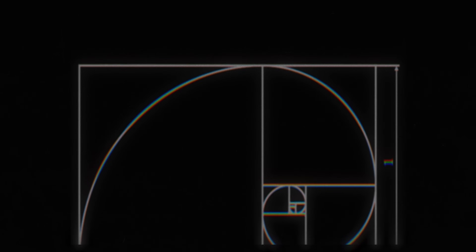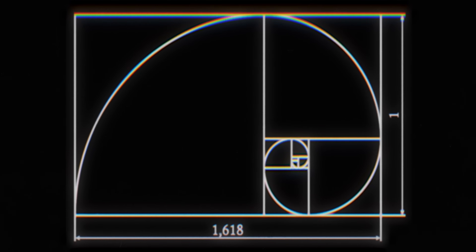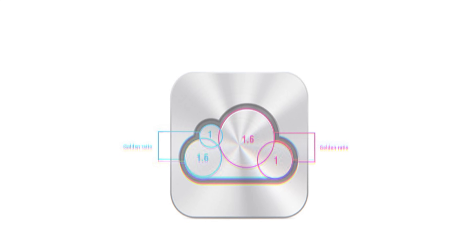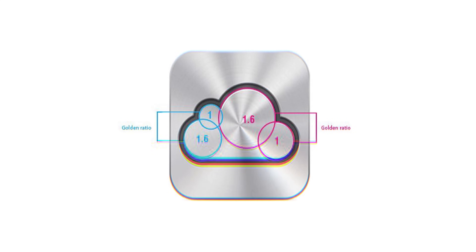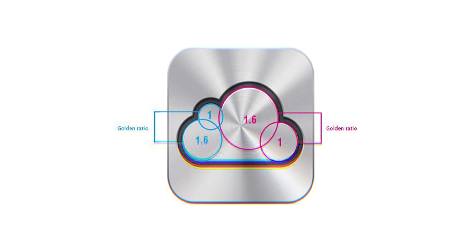Math is behind more things than you realize, and they don't need to be as complex as Perlin Noise. The golden ratio — the ratio between numbers in the Fibonacci sequence — is approximately 1.618. If we look at the iCloud icon from Apple, all the circles have relative diameters that are the golden ratio.